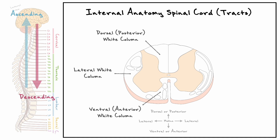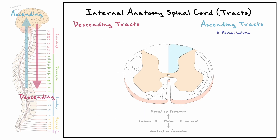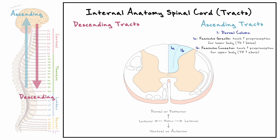Starting with the dorsal column, it contains only ascending tracts and is often divided into the fasciculus gracilis and the fasciculus cuneatus, which together carry touch and proprioception information from the body. The fasciculus gracilis supplies the lower extremities, collecting sensory information from T6 and below. For segments T5 and above, sensory information is conveyed by the fasciculus cuneatus, responsible for upper extremities. The fasciculus cuneatus is more lateral than the fasciculus gracilis because upper-region information is added onto the existing tract for the lower limbs.